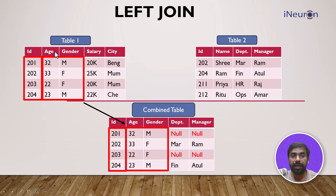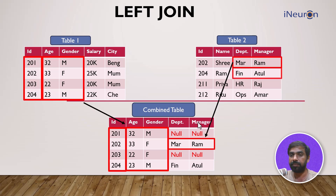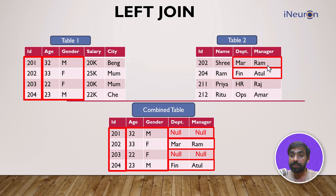The combined data takes all rows of table one — 201, 202, 203, and 204 — and the corresponding columns present in table one will have the entire data. But for the rest of the data, 202 and 204 have department manager data present in table two, so it will be reflected. However, for 201 and 203, which are not present in table two, there will be null values.